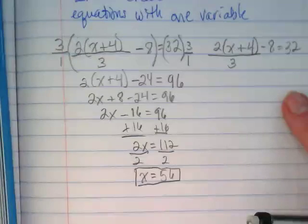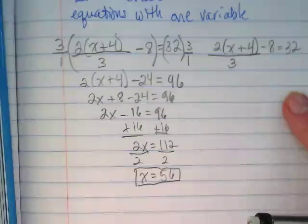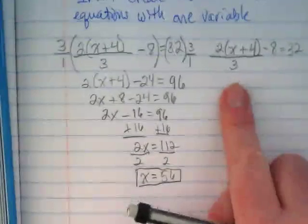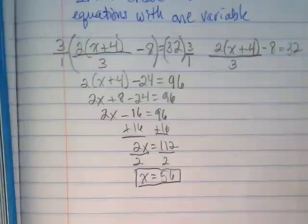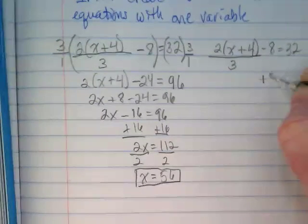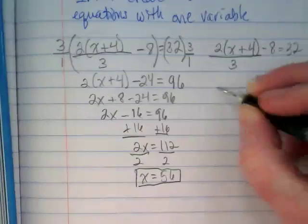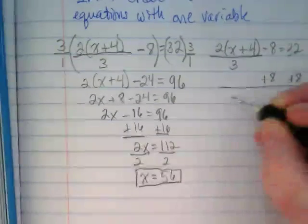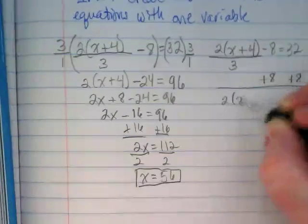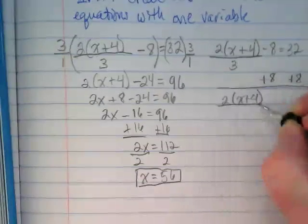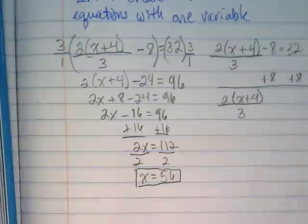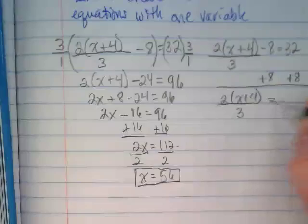This one, we're going to start with the 8. Okay, I'm going to leave the fact that this is a fraction alone, and we're going to add the 8 to both sides. So 2x plus 4 divided by 3 is still here, equals 40.